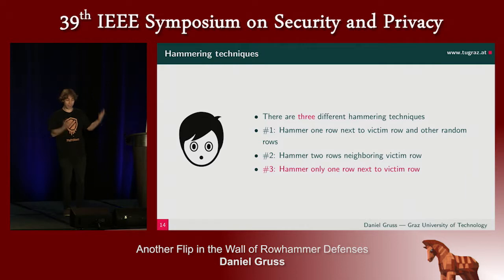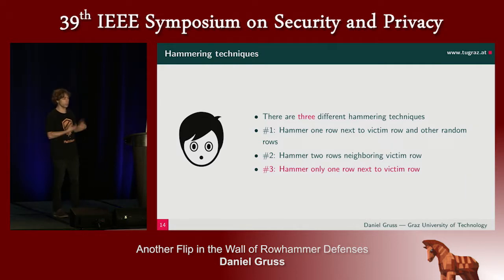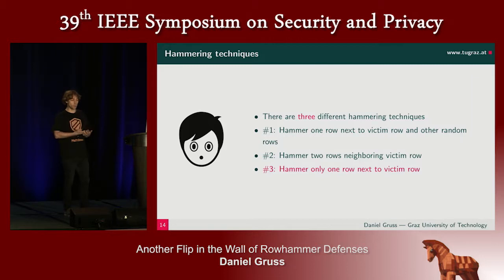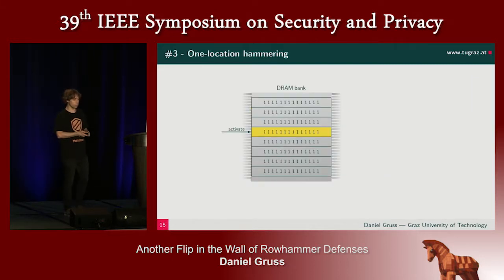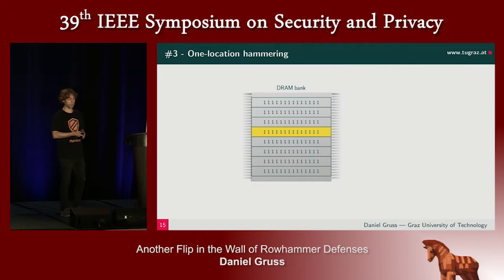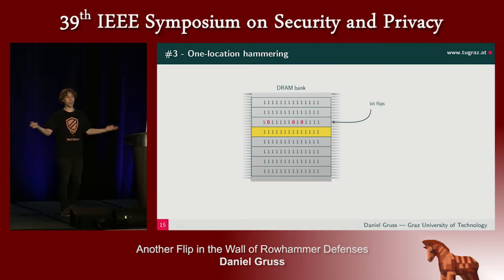Actually, there are at least three different hammering techniques because we propose a third one. With one-location hammering, you only hammer one row and expect bit flips right next to it. You hammer it, activate it, deactivate it, activate it again, and after a while, you see bit flips next to it.